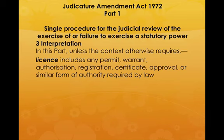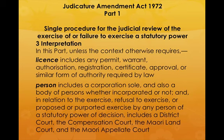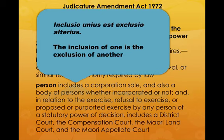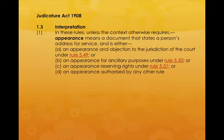In the Judicature Amendment Act 1972, 'license' includes any permit, warrant, authorization, registration, certificate, approval, or similar form of authority required by law. Now, 'person' includes a corporation sole and also a body of persons, whether incorporated or not. If you know your maxims — maxims being the highest point of law — the maxim inclusio unius est exclusio ulterioris means the inclusion of one is the exclusion of another. So if one is included, everything else is excluded. A person is not the living man that we think it is; it's a corporation sole and a body of persons.